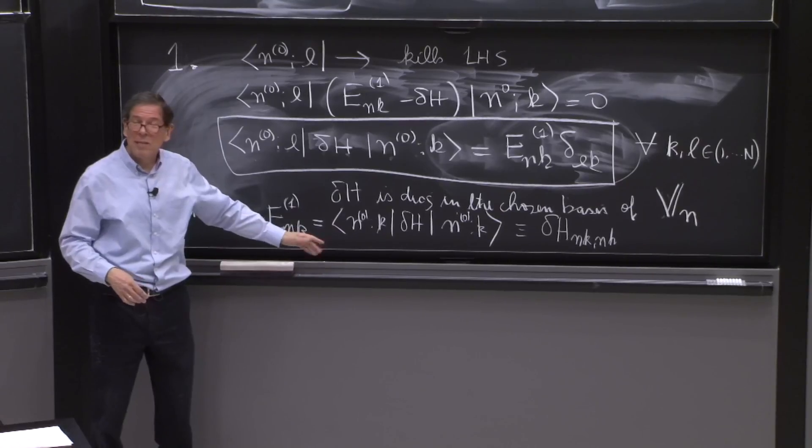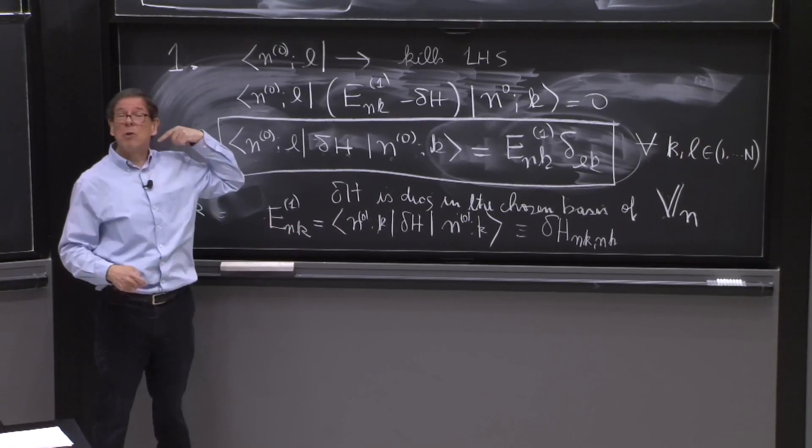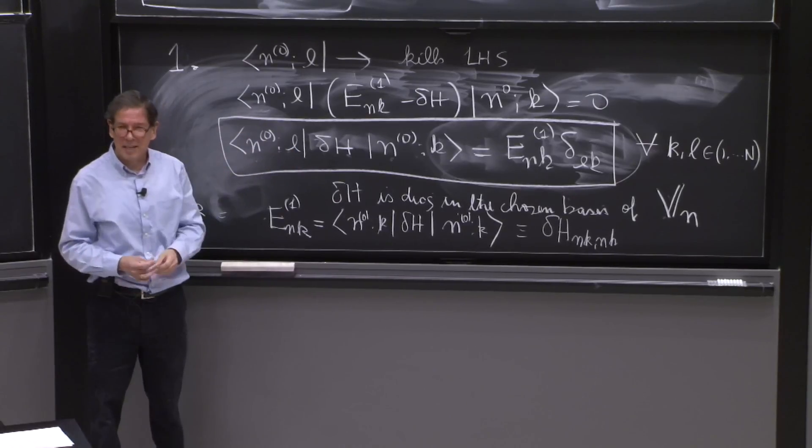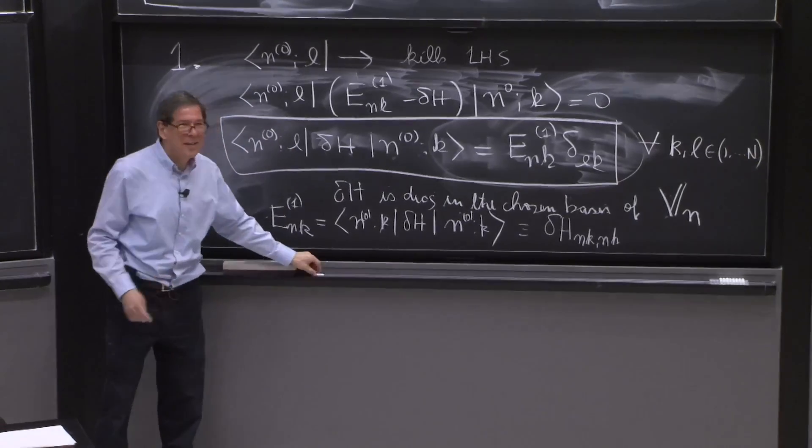So the degeneracy is broken. Then things are easier. If the degeneracy is not broken, the degeneracy may be broken to order lambda squared, which is more interesting, and it will be something we'll study next time. So that's all.